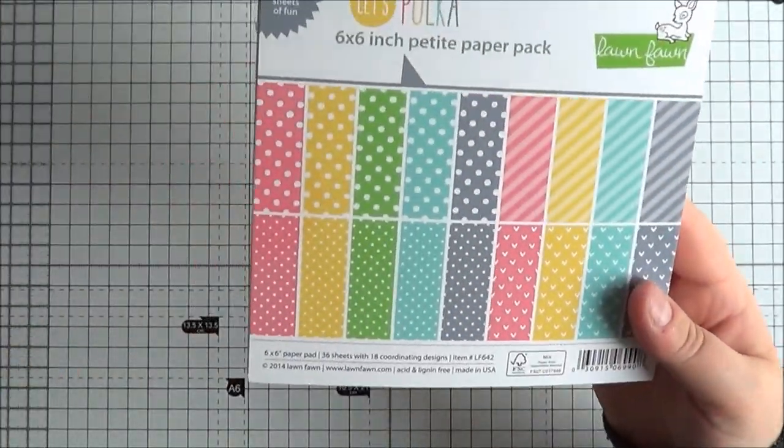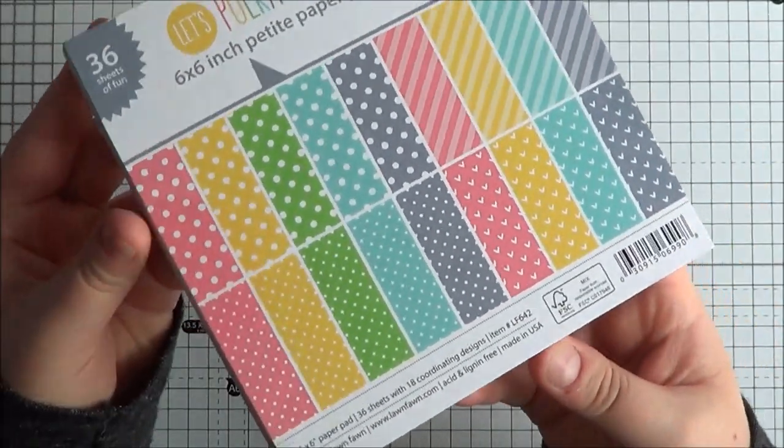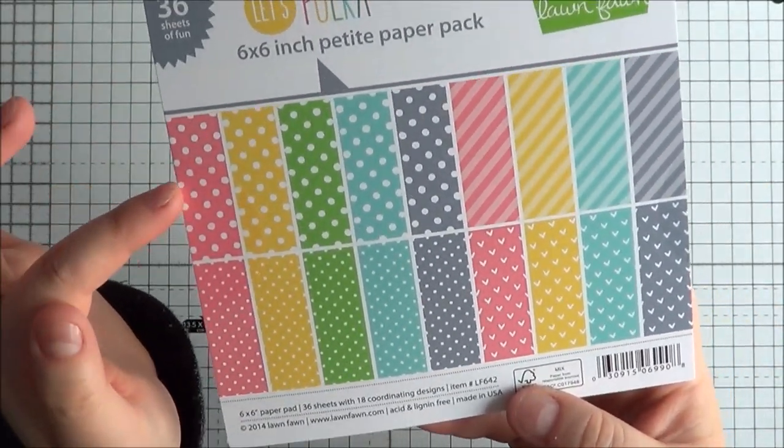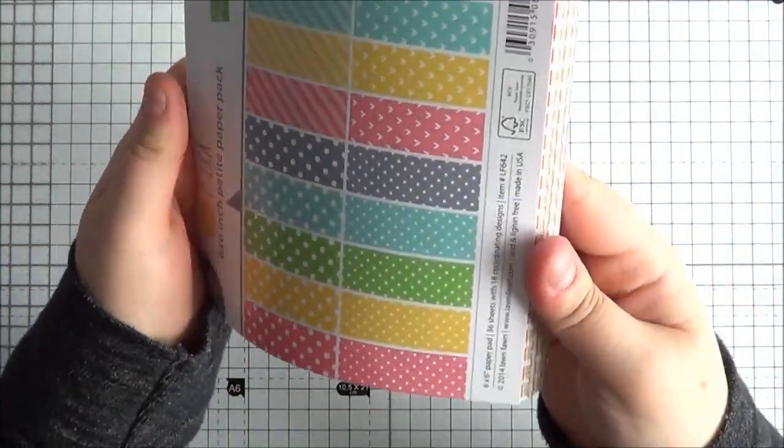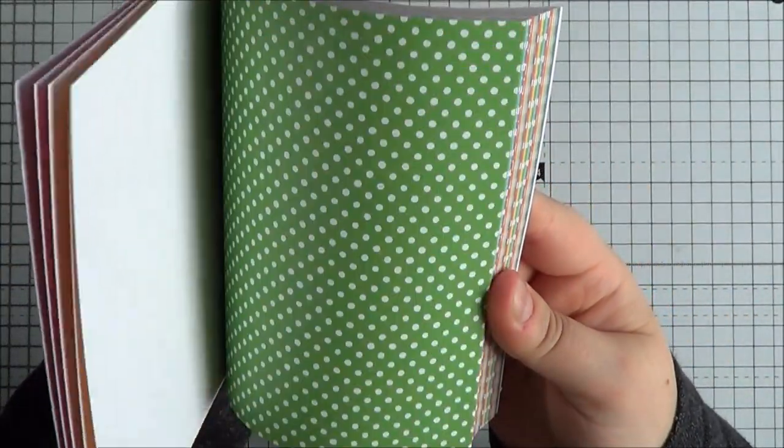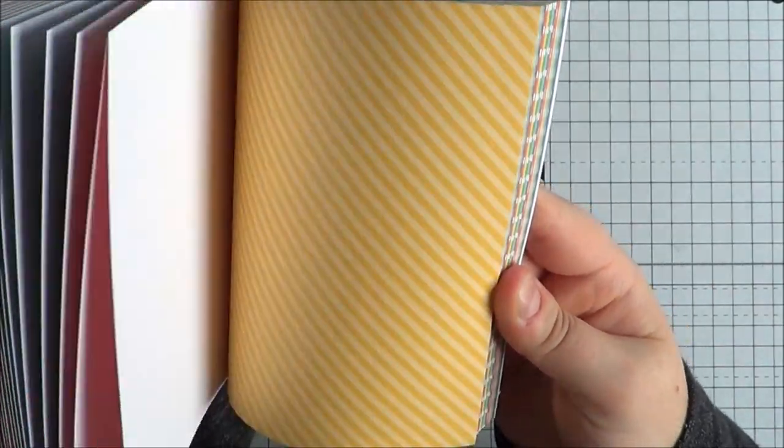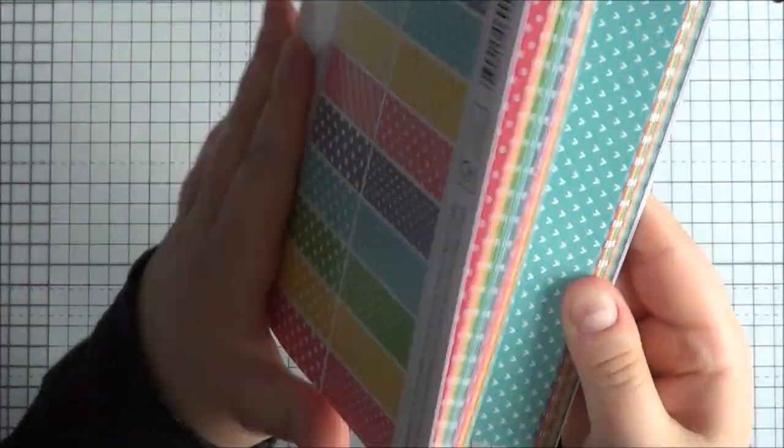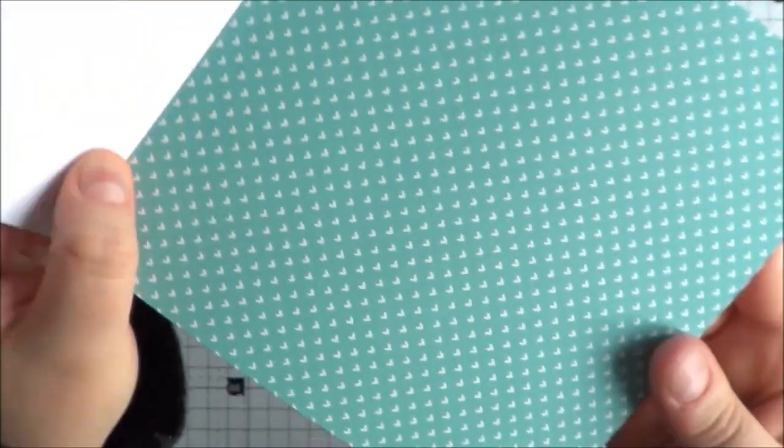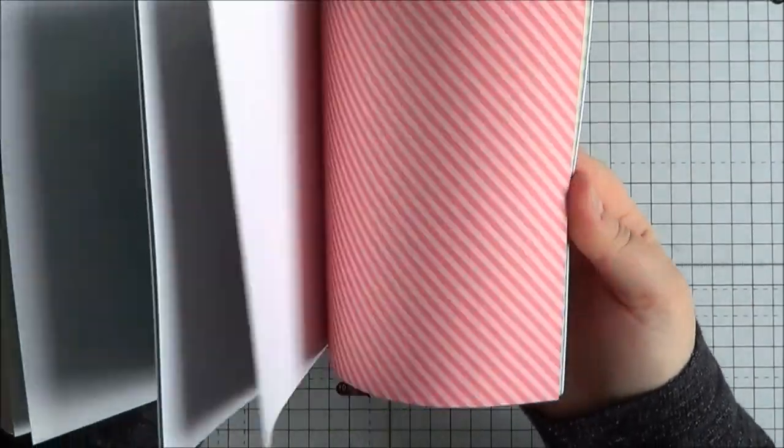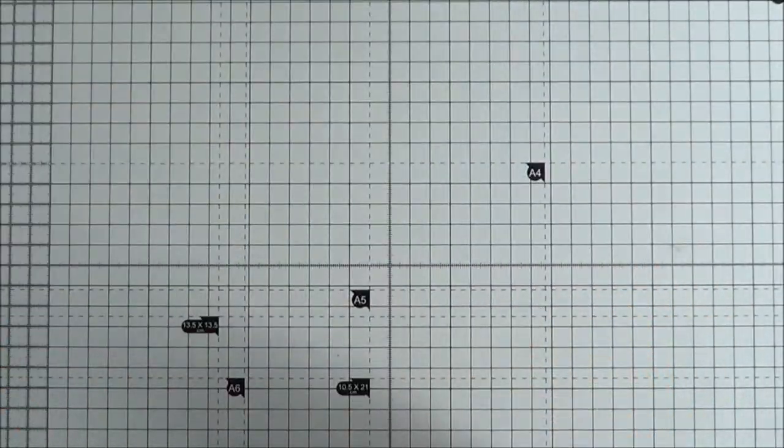And then the other one is Let's Polka. I love this. So you've got small polka dots, you've got large polka dots, you've got stripes and then you've got little tiny hearts. They're a bit like polka dots and then you've got them all in the different colours. Which again, really cute. Just like that one. I love that. That's so cute with the little hearts. Yeah, so just really nice. I really like that pad.